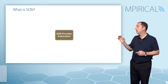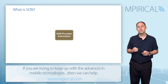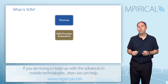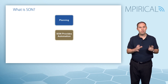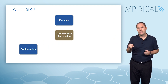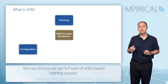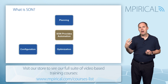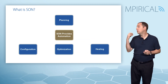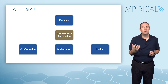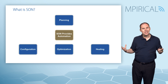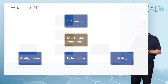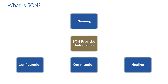So what is SON? SON provides automation to facilitate the introduction of new macro cells or small cells. When talking about SON, there are three different areas: the first is self-configuration, the second is optimization of the RAN (radio access network), and the final one is self-healing — where, for example, surrounding cells can adapt to overcome a cell outage. So the terminology self-configuration, self-optimization, and self-healing is quite key to SON.